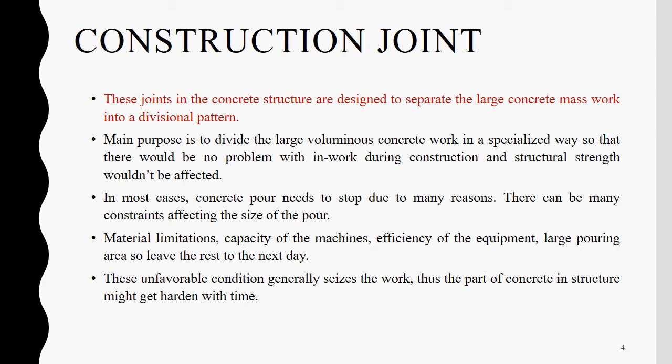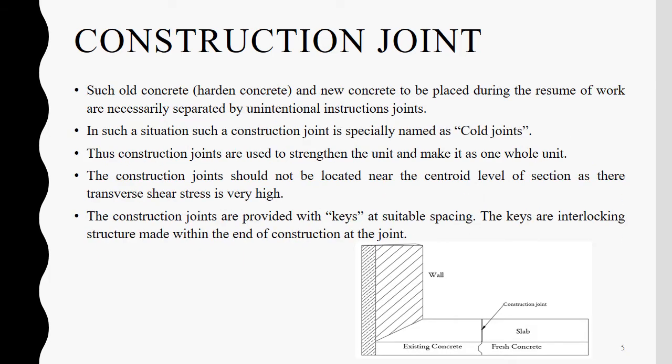Construction joints in concrete structures are designed to separate the large concrete mass work into a divisional pattern. The main purpose is to divide large voluminous concrete work in a specialized way so that there would be no problem during construction and structural strength would not be affected. In most cases, concrete pours need to stop due to many reasons such as material limitations, capacity of machines, efficiency of equipment, or a large pouring area requiring the rest to be left to the next day. These unfavorable conditions generally cease the work, and part of the concrete in the structure might get hardened.